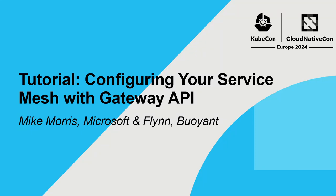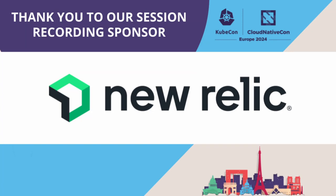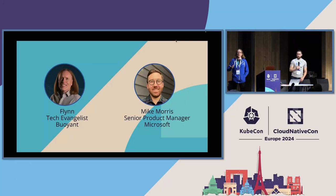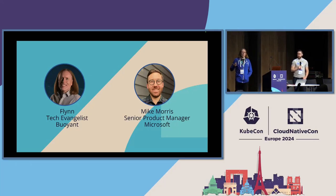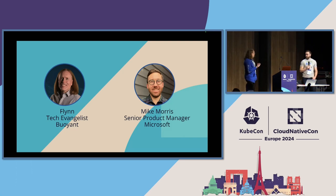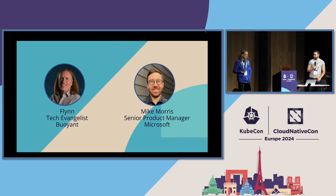Welcome to the Gateway API workshop. I'm Flynn. I am a tech evangelist with Buoyant. I work primarily with Linkerd. In a past life I was also the original author of the Emissary Ingress API Gateway, and these days I work also with Gateway API and I'm a co-lead for the Gamma Initiative.